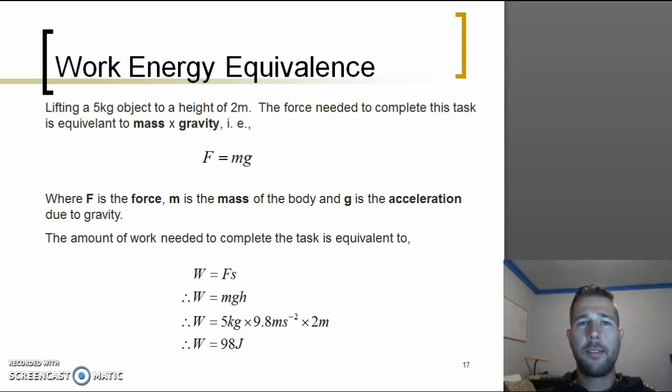Just a quick example to help with our explanation. Say if we lift a 5 kg object to a height of 2 m, the force needed to complete this task is equivalent to mass times gravity. That's just our formula F equals ma. We can easily calculate this because we know the mass and we know the value of gravity.